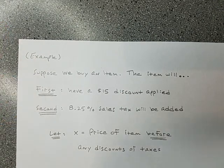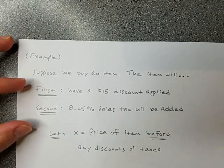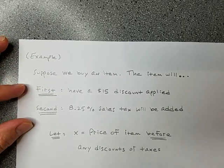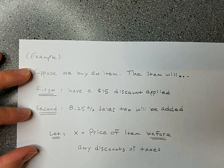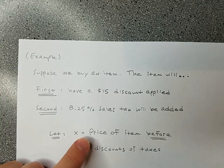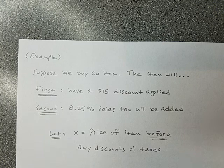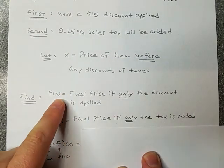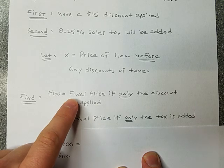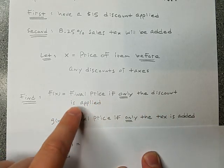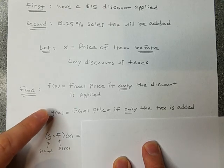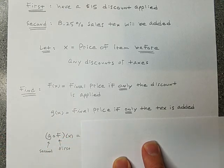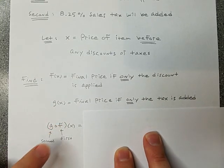Okay. All right. Now, I take it you bought something at a store before. So you understand what I'm saying is happening. Okay. Now, in order for us to do a little math, let's let X be the price of the item before there's any discounts or taxes. So that's like the on the shelf price of the item. Can you find these things? Can you find f of x, which is a formula to tell me the final price of the item if only the discount is applied? Can you tell me g of x, the final price of the item, if only the tax is added? And then can you find the composition g of f?